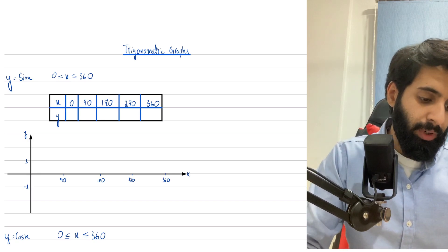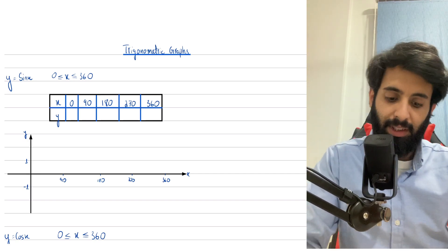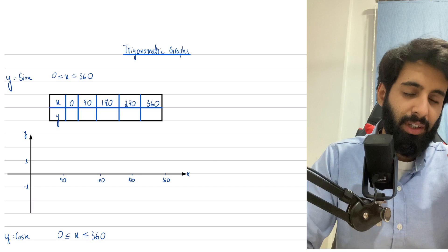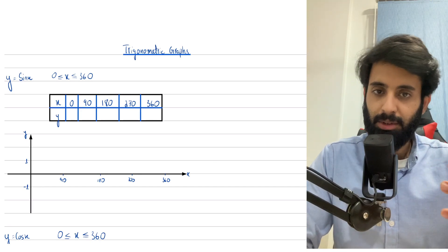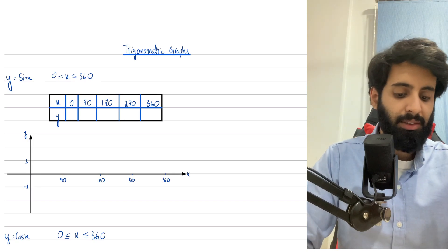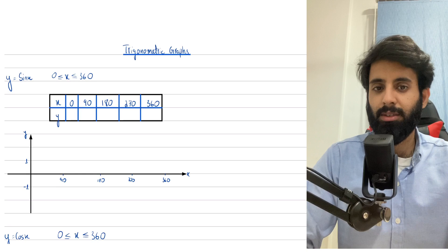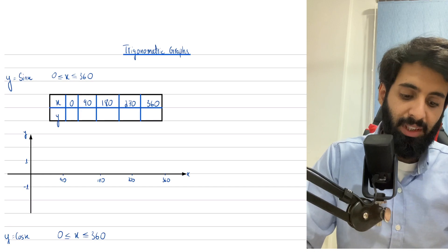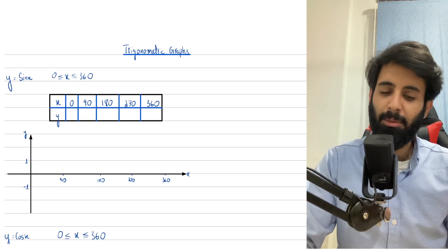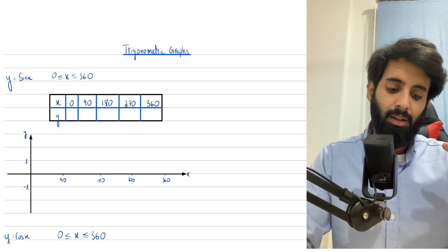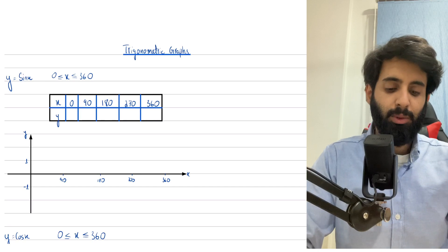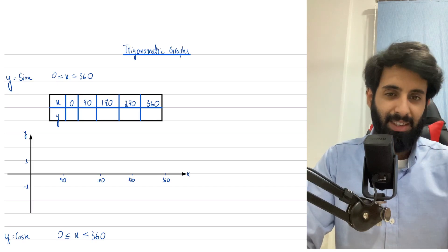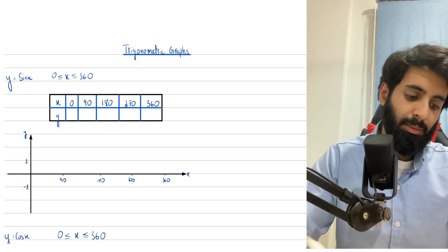So here you have y equals sine x. Whenever you're sketching graphs, there's one thing you will always notice, and that is you're always going to be given a range of x — you can see that over here, you're provided with a range. You've got to know where exactly you need to start and where exactly you need to stop. So you're going to start from zero and stop at 360. I've made a table over here, and you may be wondering why I've taken values with intervals of 90. Well, the case with sine and cos is that the step you take is 90 — we like to call this the natural step.